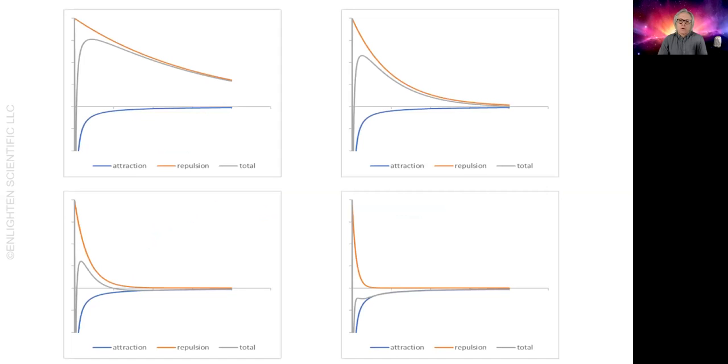Let's look at the four different salt concentrations. The energy barrier becomes smaller as you increase the salt concentration. By the time you get to the highest salt concentration, there is no barrier, and the particles will aggregate.